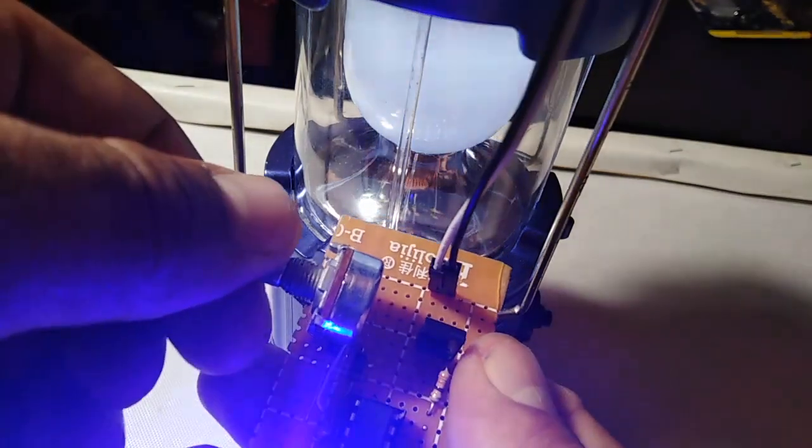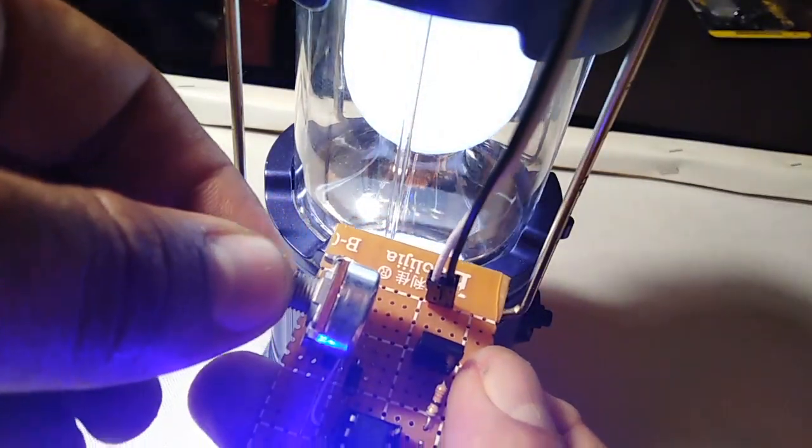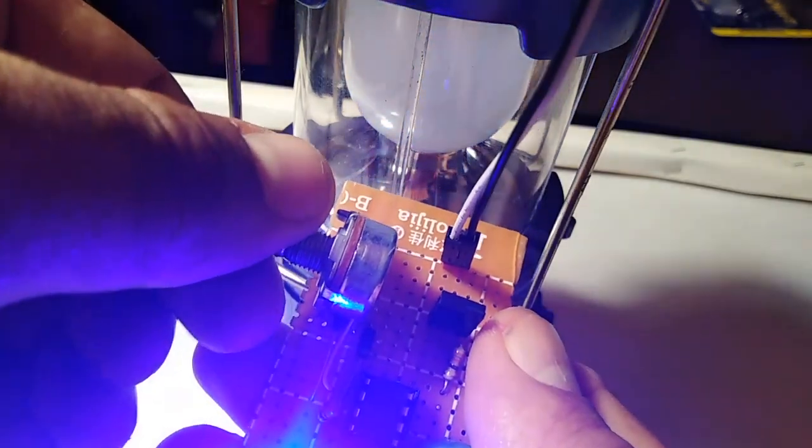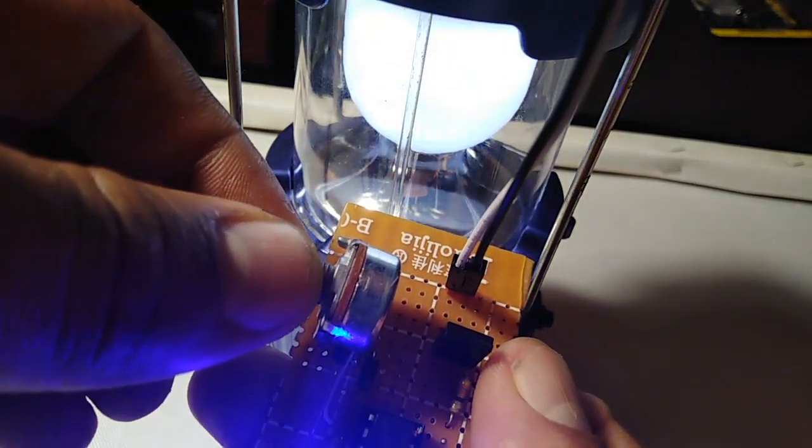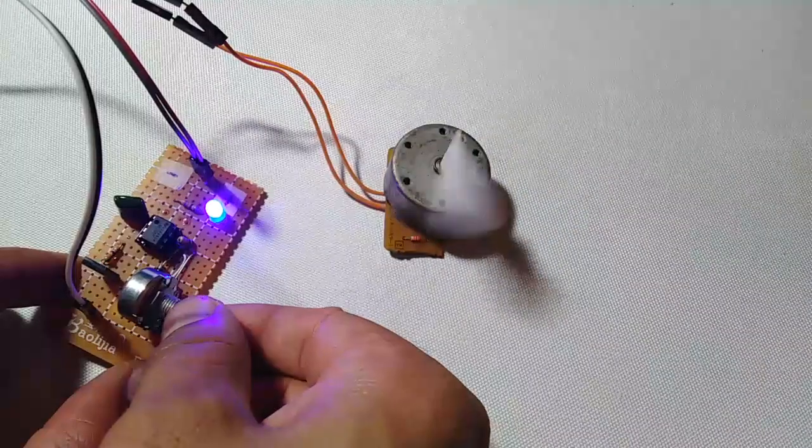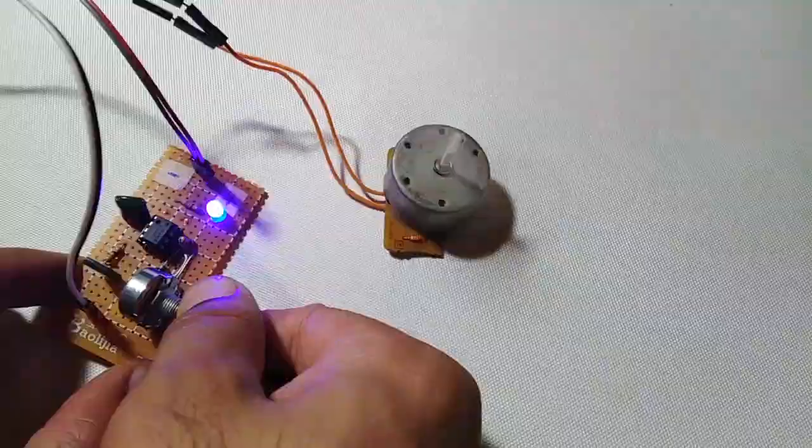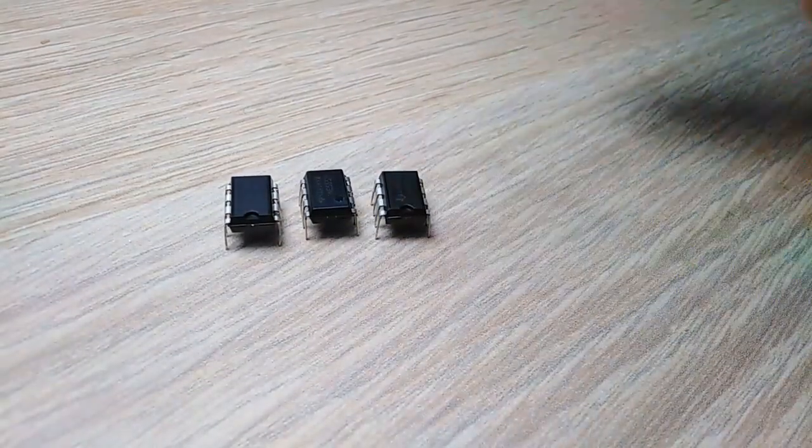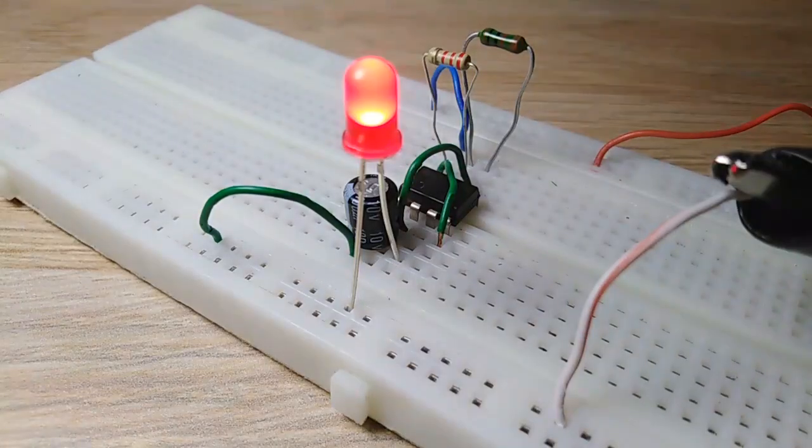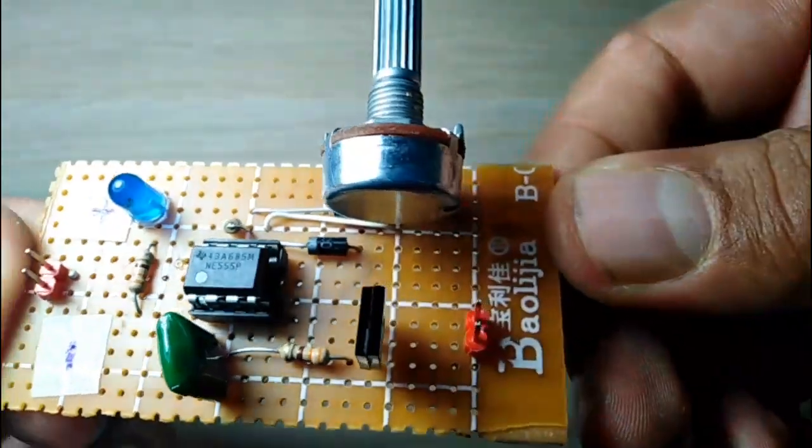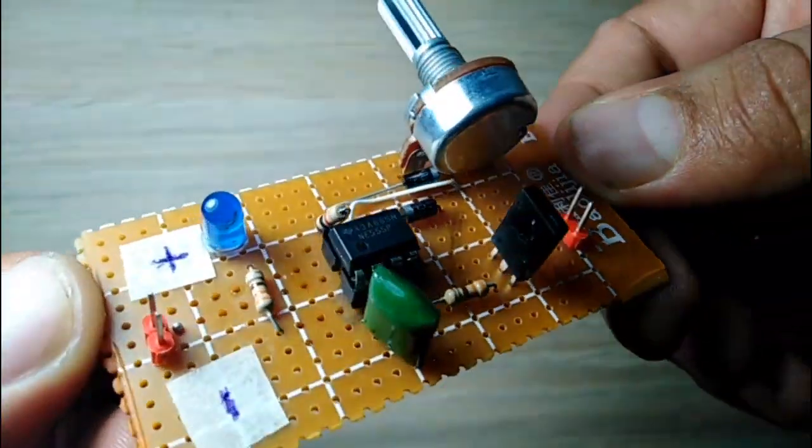PWM is a technique used everywhere with electronics to vary the power supply to devices and components such as LEDs and motors. In this video we will take a detailed look at how the 555 timer PWM generator circuit works, how to use it for controlling the speed of DC motors, and how to make a custom PCB for it. Let's get started.